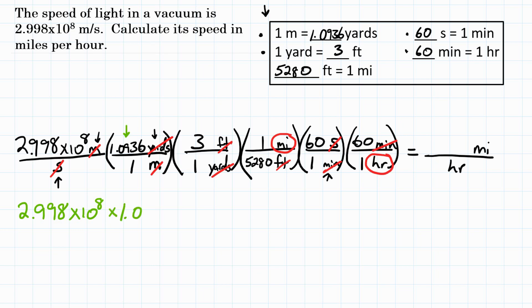So we're going to multiply by the top of this first conversion factor, which is 1.0936. We would divide by the bottom here, but it's just 1. We're going to skip anything that's 1 because it's not really going to change our answer. So we'll go on to the second conversion factor and we will multiply by 3. Skip the divide by 1, skip the multiply by 1, and divide by 5,280. We'll multiply by 60. And then we're going to multiply by 60 again.